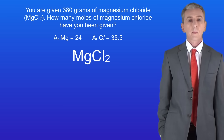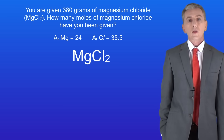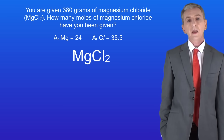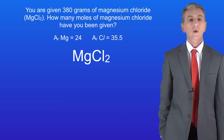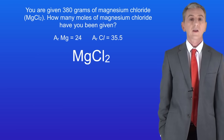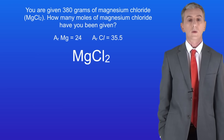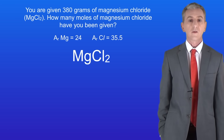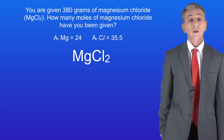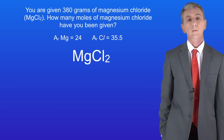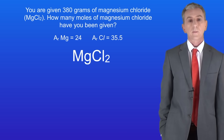Here's one for you to try. You're given 380 grams of magnesium chloride. How many moles of magnesium chloride have you been given? The formula of magnesium chloride is MgCl2. The relative atomic mass of magnesium is 24 and the relative atomic mass of chlorine is 35.5. Pause the video now and try this yourself.